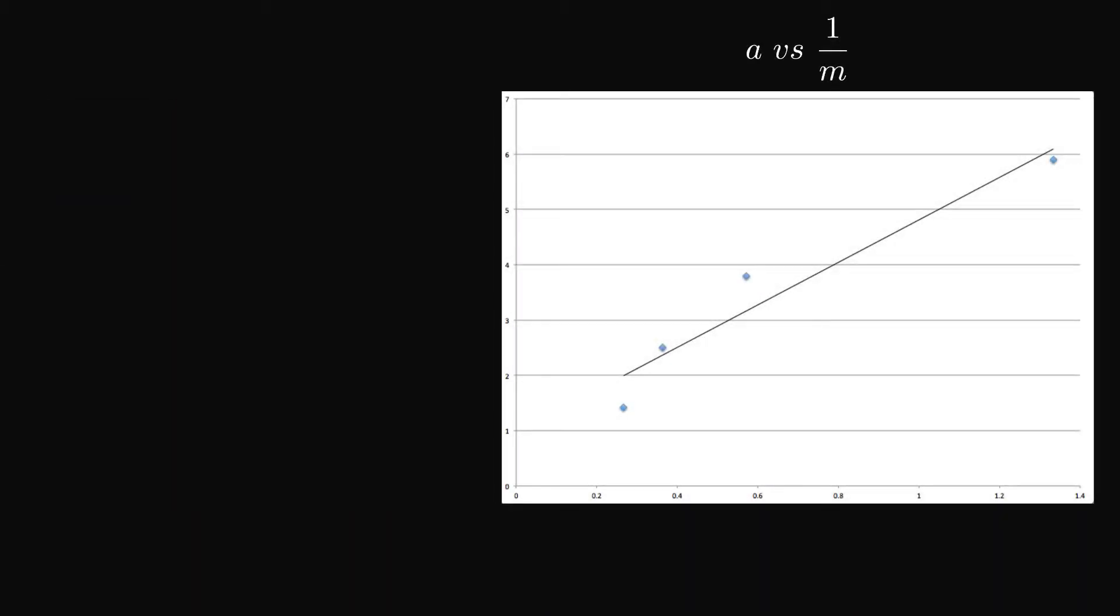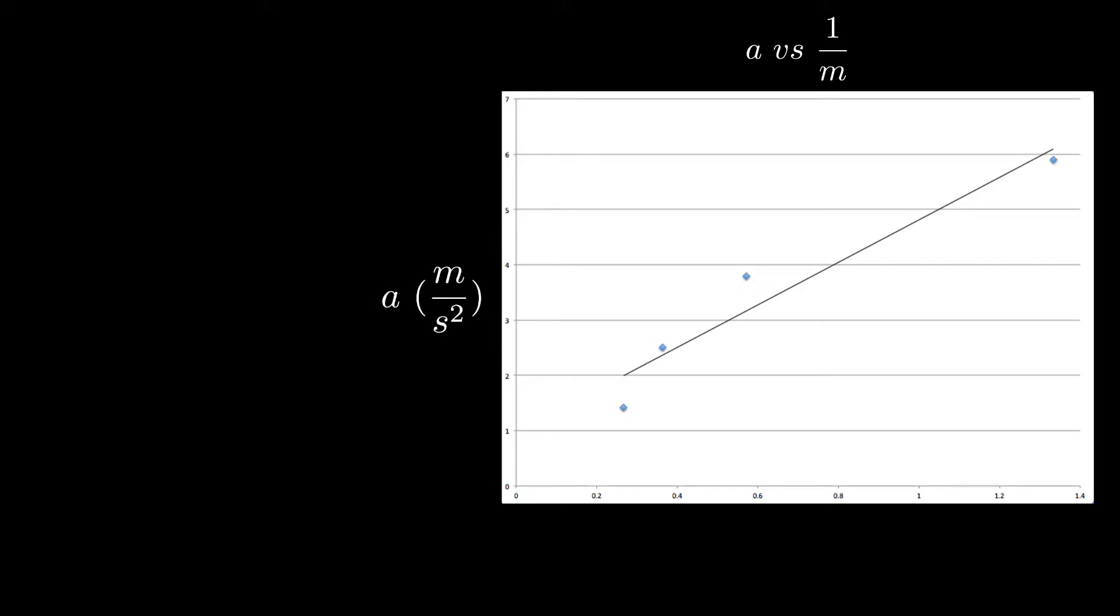So here we've got a graph where we've plotted the acceleration along the y-axis and one over the mass on the x-axis. So you can see this has got a fairly nice straight line relationship, which is what we're expecting, because when we stated Newton's second law, we said that the acceleration was proportional to one over the mass. So we'd expect acceleration versus one over mass to be a nice straight line.